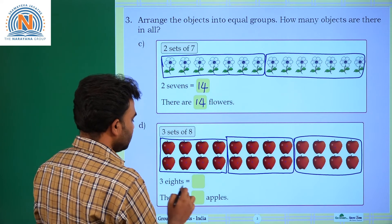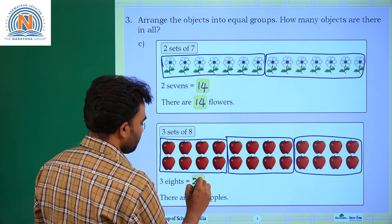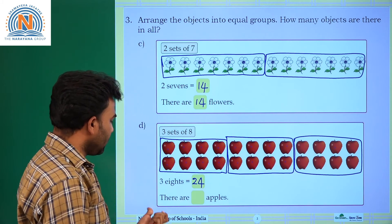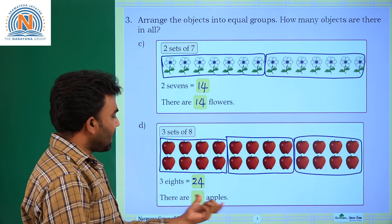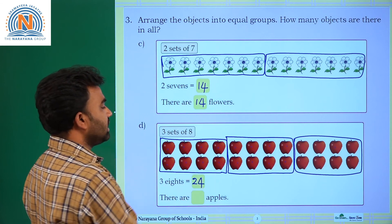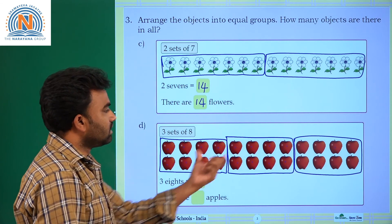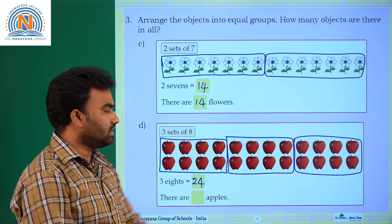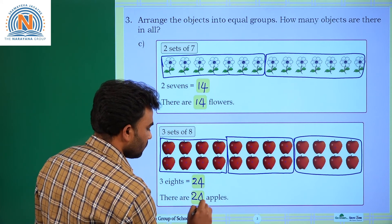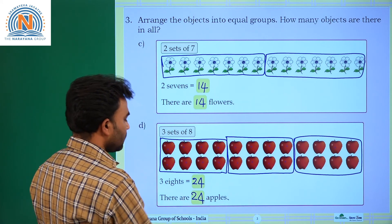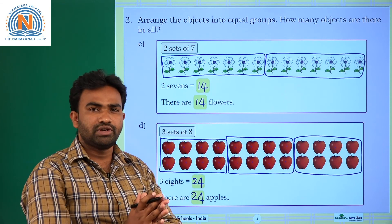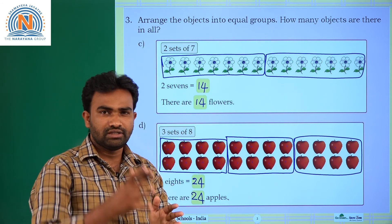Three eights is twenty-four. Each set is having eight apples and there are three sets — three eights is twenty-four — so there are twenty-four apples in all. This is our assignment for today, children. Thank you.